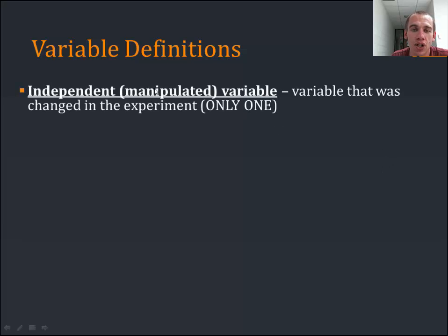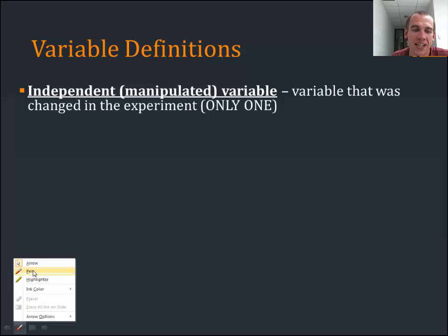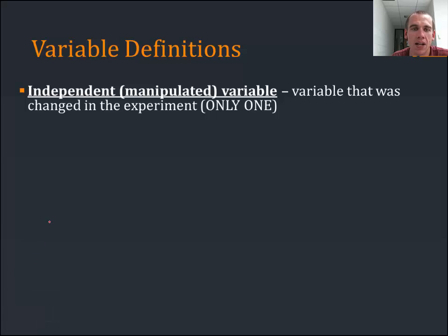The variable that you change is the one you manipulate. It's also called the independent variable because it doesn't depend on anything at all. You have total and complete control over what you're going to do to it. So it's an independent variable. It's the one you manipulate. There's only one of those per experiment.